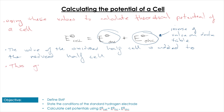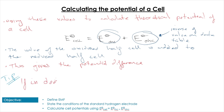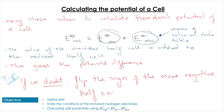A little tip as we get started on these calculations: if you flip the sign of your most negative cell potential, that is going to be the one that is oxidized. So flip the sign of the least positive - or most negative - half-cell value.